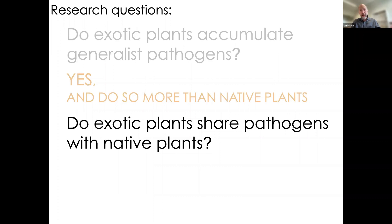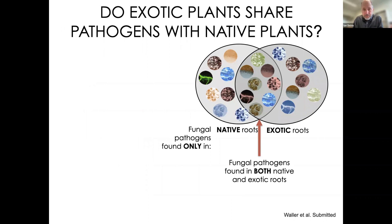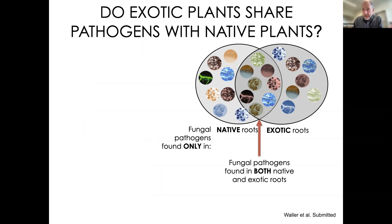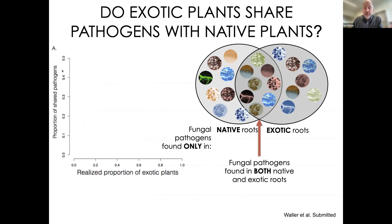We then looked at the network of interactions. Lauren used normalized degree — of all the possible connections a plant could make through pathogens, how many did it actually make? The exotic plants have a much higher normalized degree than native plants, indicating they're interacting with more generalist associations. So do exotic plants accumulate generalist pathogens? The answer is yes, and they do so more than native plants.